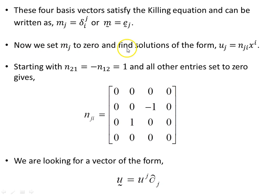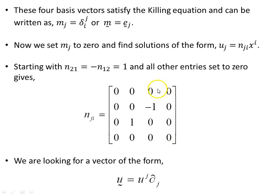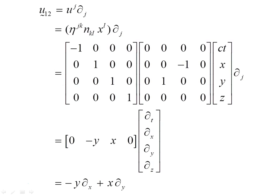Next we set m_j to zero and find solutions of the anti-symmetric matrix part times this vector, which when we sum out the i's gives us a vector. Starting with n_21 equals minus n_12 equals 1, and all other entries set to zero, gives us this matrix. We're looking for a vector of the form u equals u superscript j times these basis vectors, as we've seen in the previous video on directional derivatives.